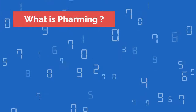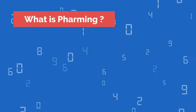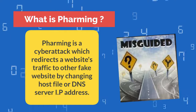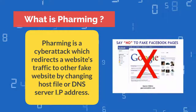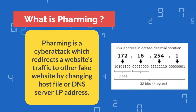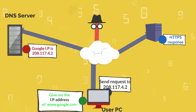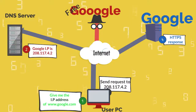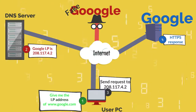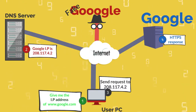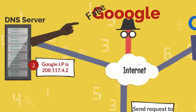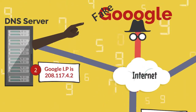What is pharming? Pharming is a cyber attack which redirects a website's traffic to a fake website by changing the host file or DNS server IP address. It is a malicious activity that happens on the internet between a user's computer, DNS server, and web server. The user tries to access a particular website but is redirected to a fake website.